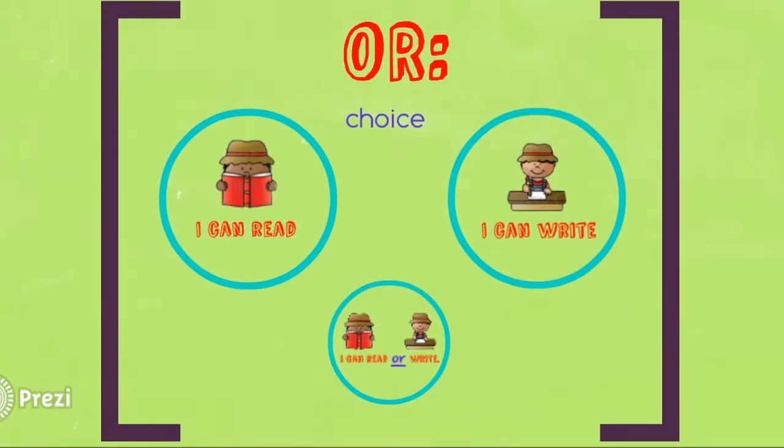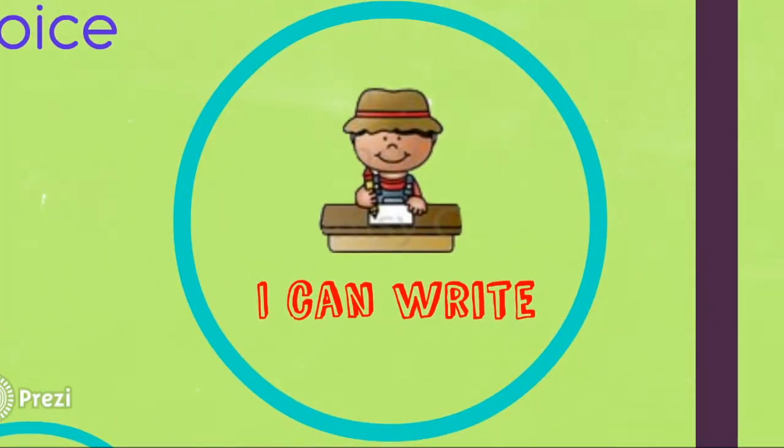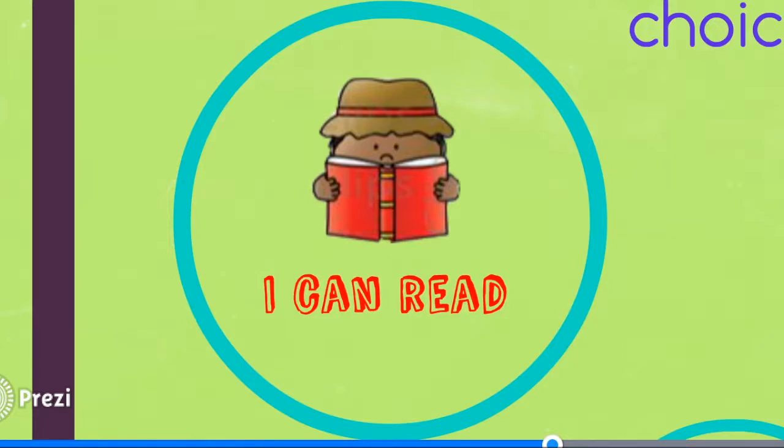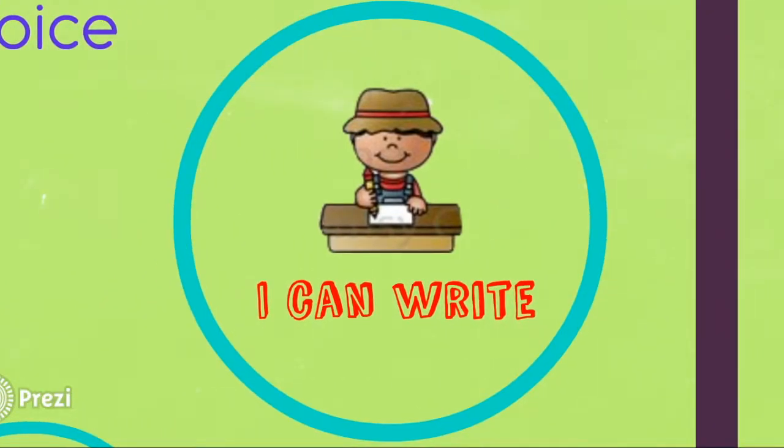And our last conjunction is or. Or is a connecting word that suggests there is only one choice. Here, or is used to give a choice of either reading or writing. So in this phrase, it says I can read. And in this phrase, it says I can write.